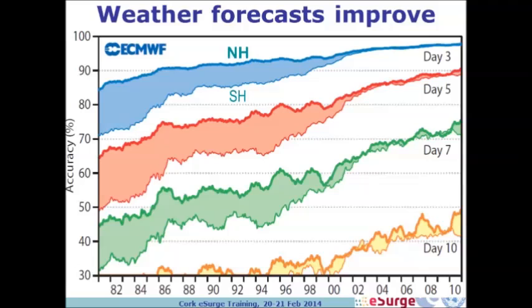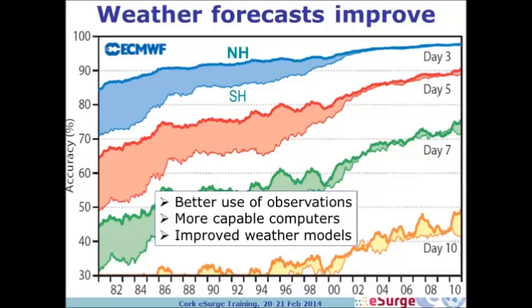You gain approximately one day in forecast range for the same accuracy every 10 years. Of course nobody knows how long this can continue. Other reasons for improvement include faster computers allowing more resolution, and having many observations allows comparison with models, tweaking models to fit observations, and assimilating more data.